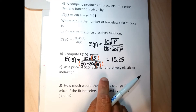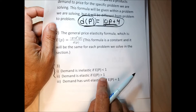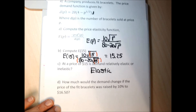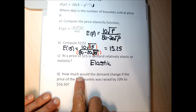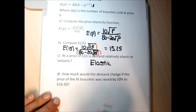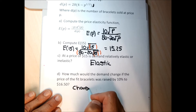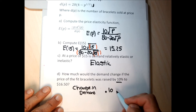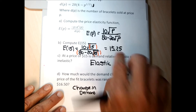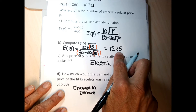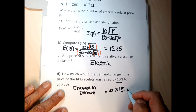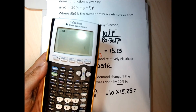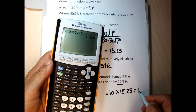At a price of $15, since E(15) equals 15.25 which is greater than 1, demand is relatively elastic. Now for part D: how much would demand change if the price of the fit bracelet was raised by 10%? The demand change equals the percent price change as a decimal — 10% becomes 0.10 — times the price elasticity number at that price: 0.10 times 15.25 equals 1.525.